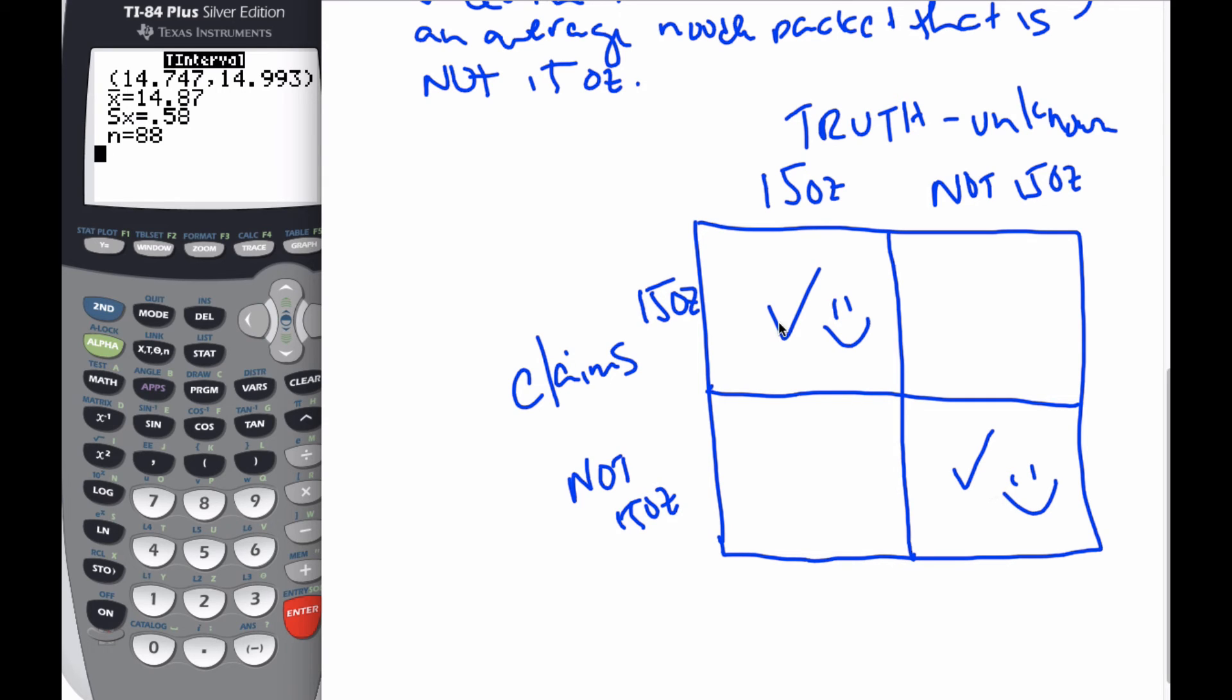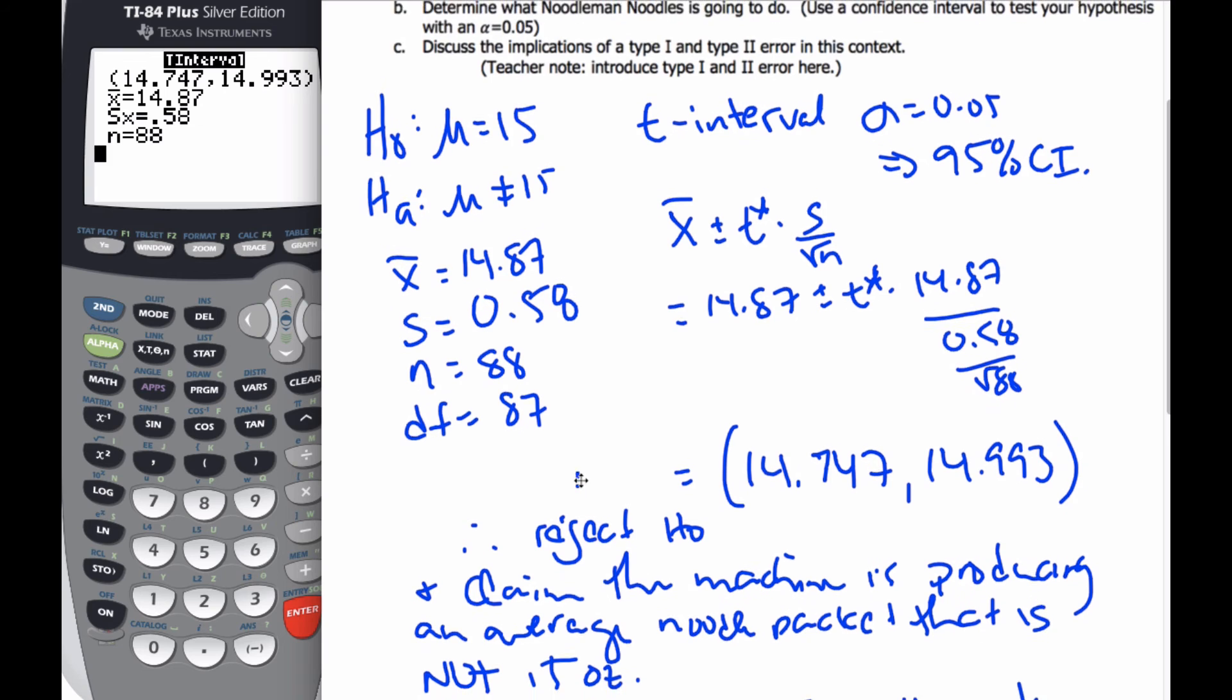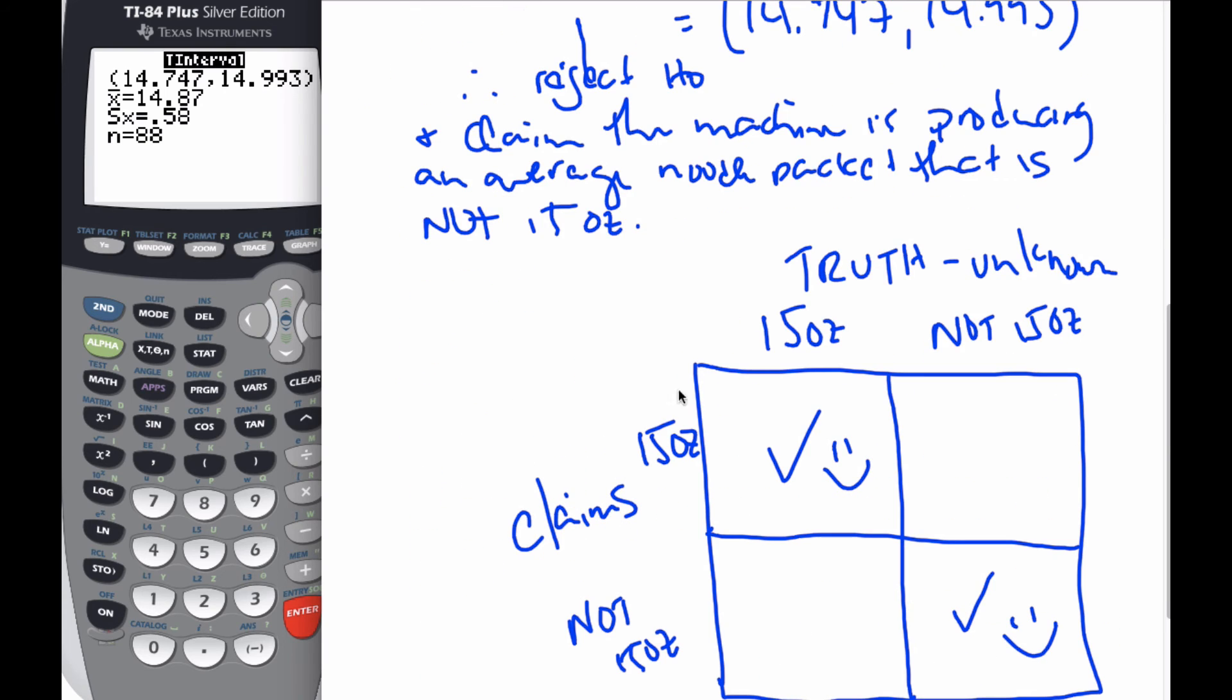But every so often, we know by statistics, if we would make this confidence interval 100 times, in this example, 95% of them would capture the true value. We don't know if this was one of those 95% because 5 out of 100 times it will not capture the true value. If that happens, then we claim it's not making those noodle packages when in truth it is. The probability of that happening is alpha. We call this a type 1 error.